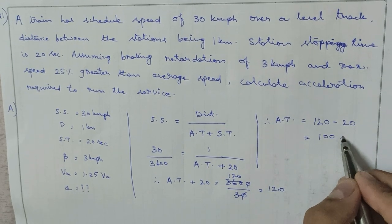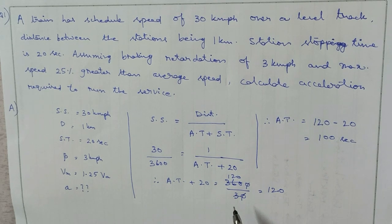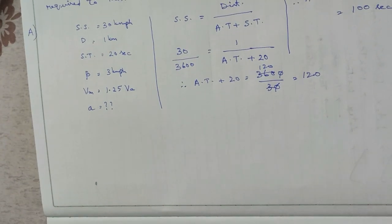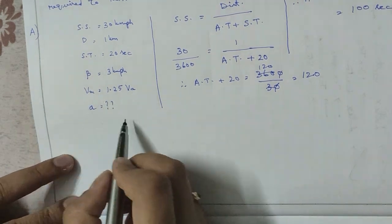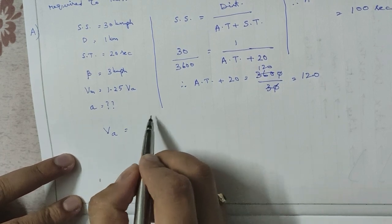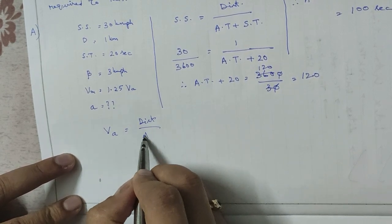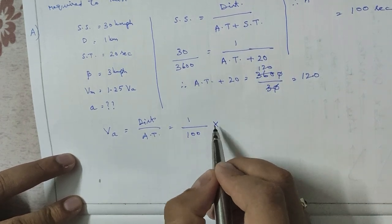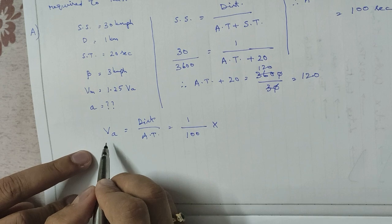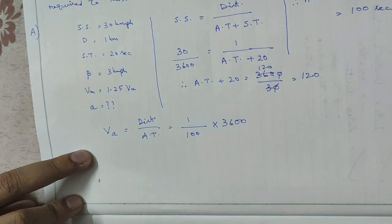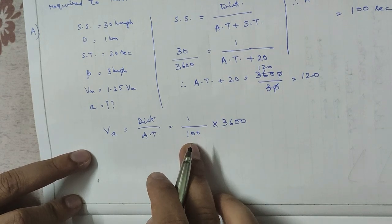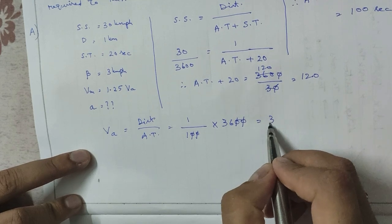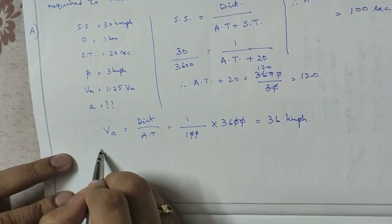Therefore, actual time = 120 − 20 = 100 seconds. Now, average speed Va = distance ÷ actual time = 1 km ÷ 100 seconds. Converting to kmph by multiplying by 3600, Va = 36 kmph.